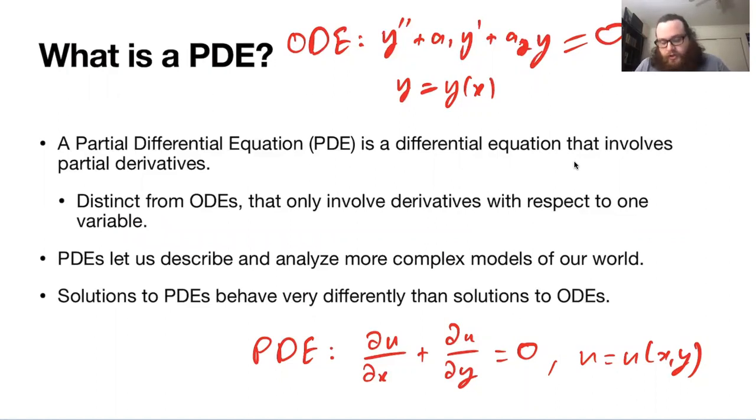While ODEs can describe a lot of behavior and a lot of dynamical systems are described using ODEs, if we want to describe much more complex models for our world, then we really have to incorporate more than one kind of variable. So in general, PDEs let us just describe more complex models of everything we see around us.